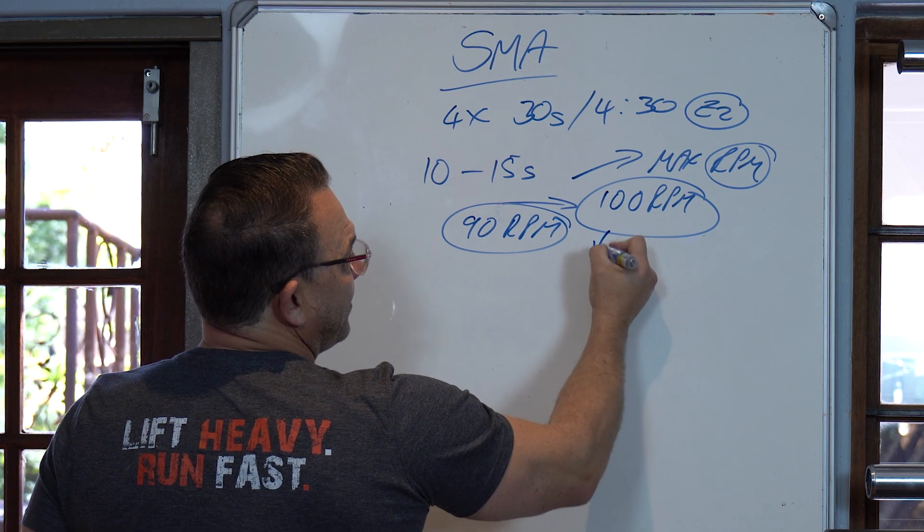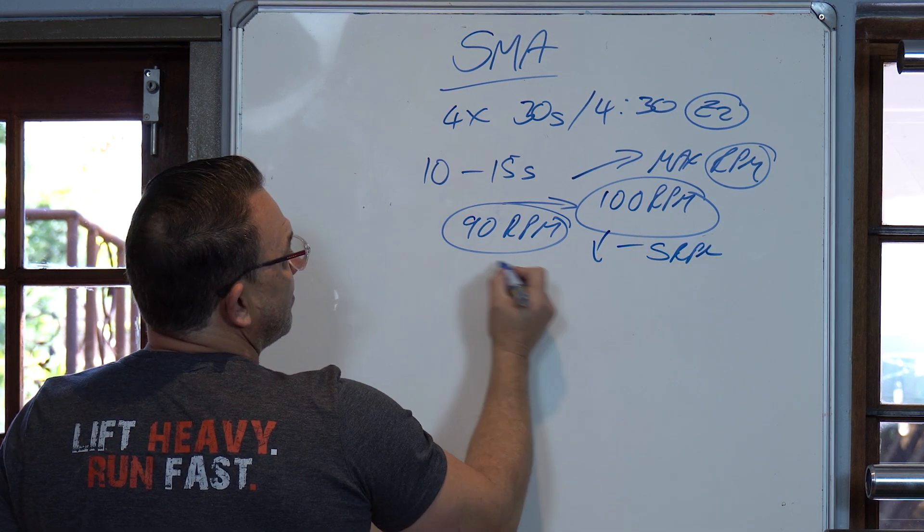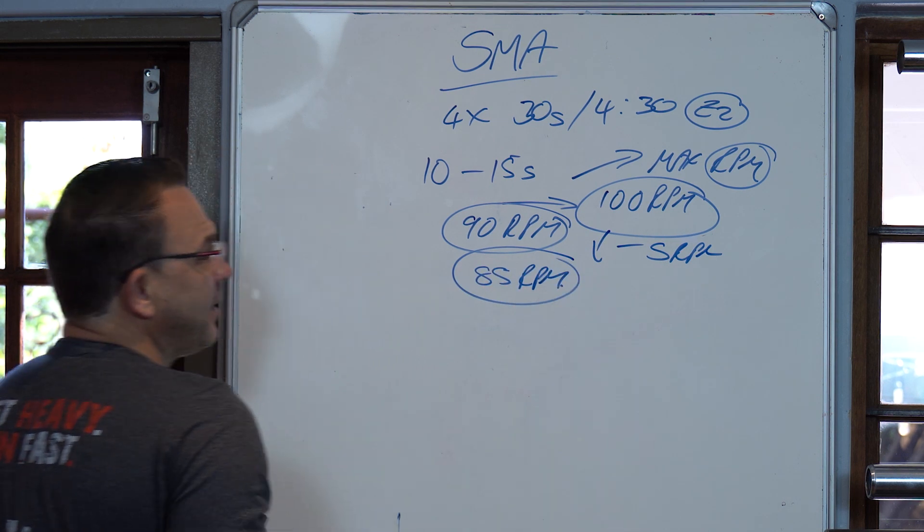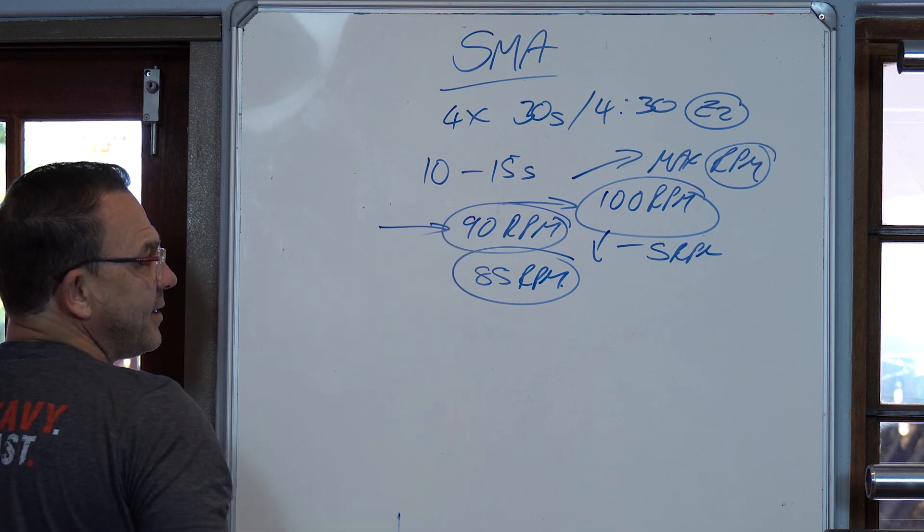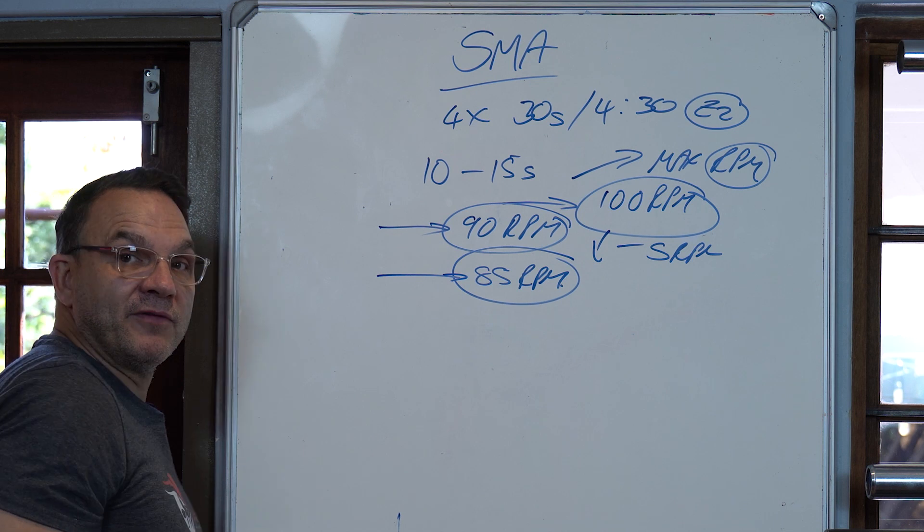My safety RPM is minus 5 RPM from there, which means my dropout is 85 RPM. That means I'm going to be working at 90 RPM and I'm going to be failing at 85 RPM.